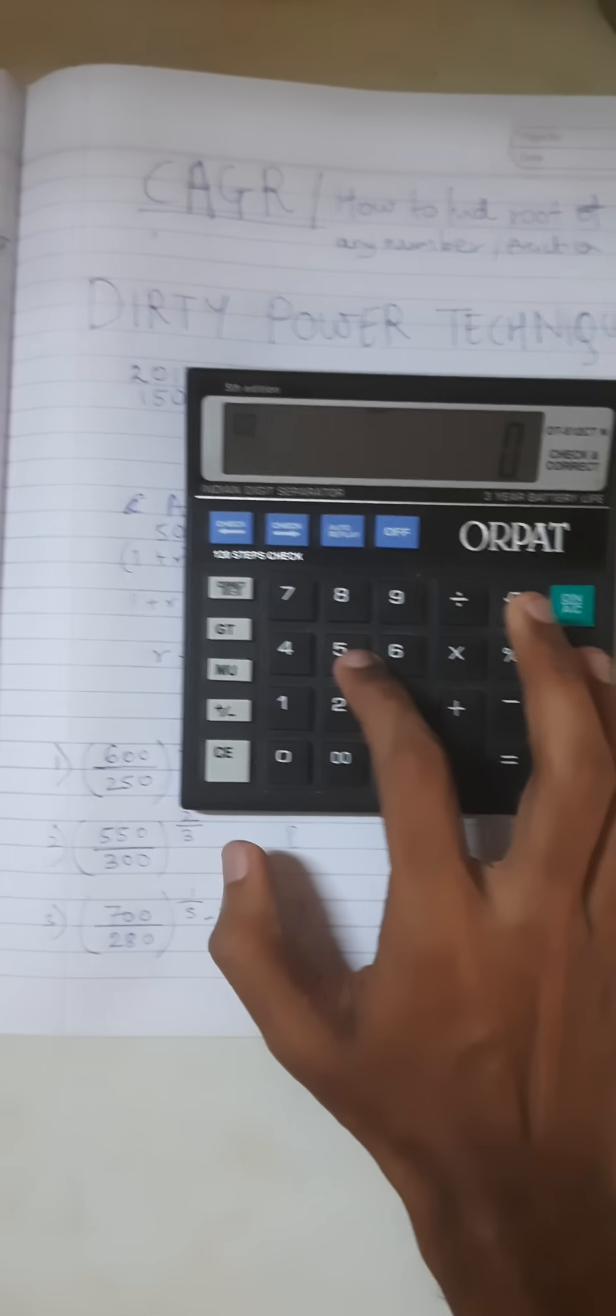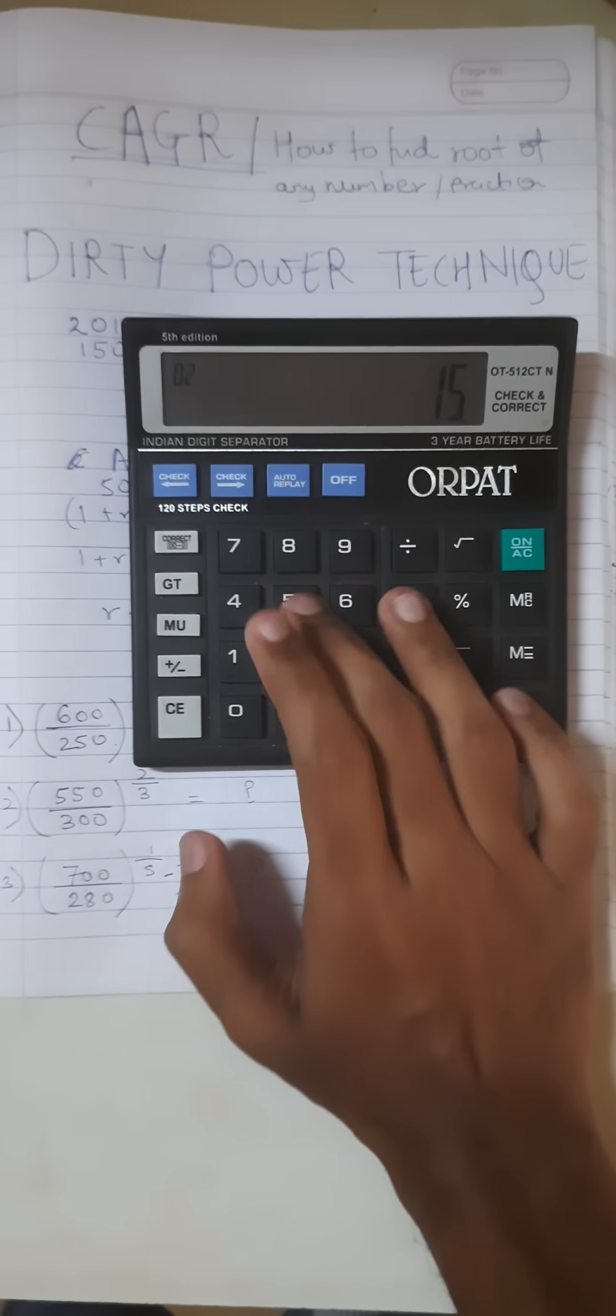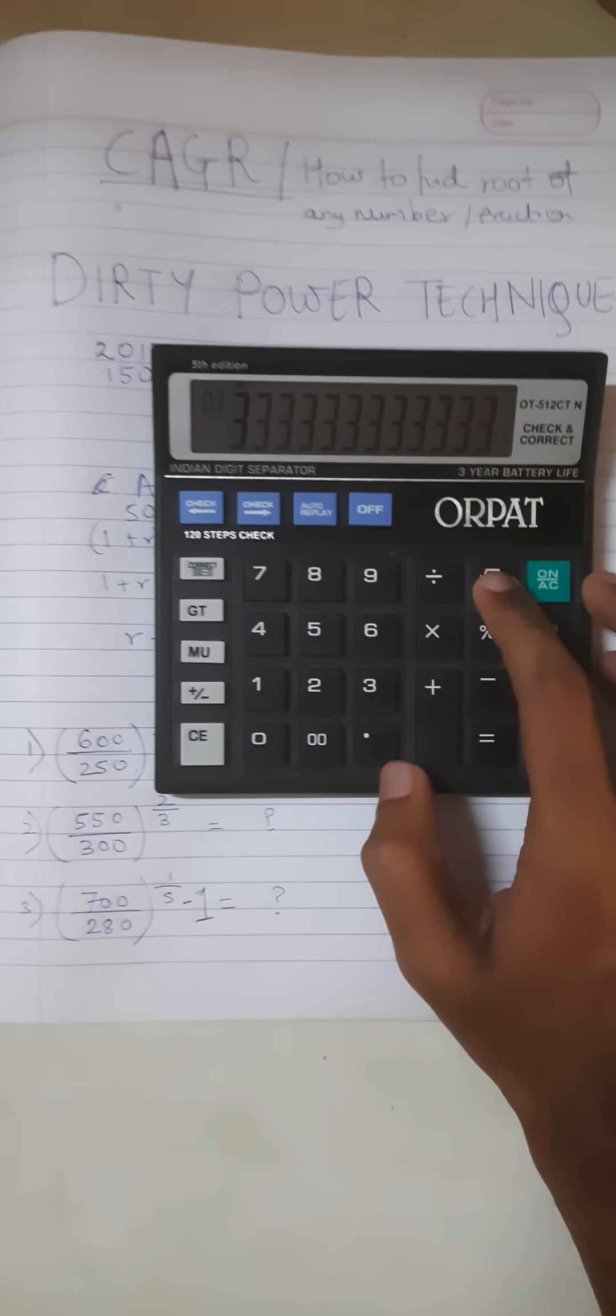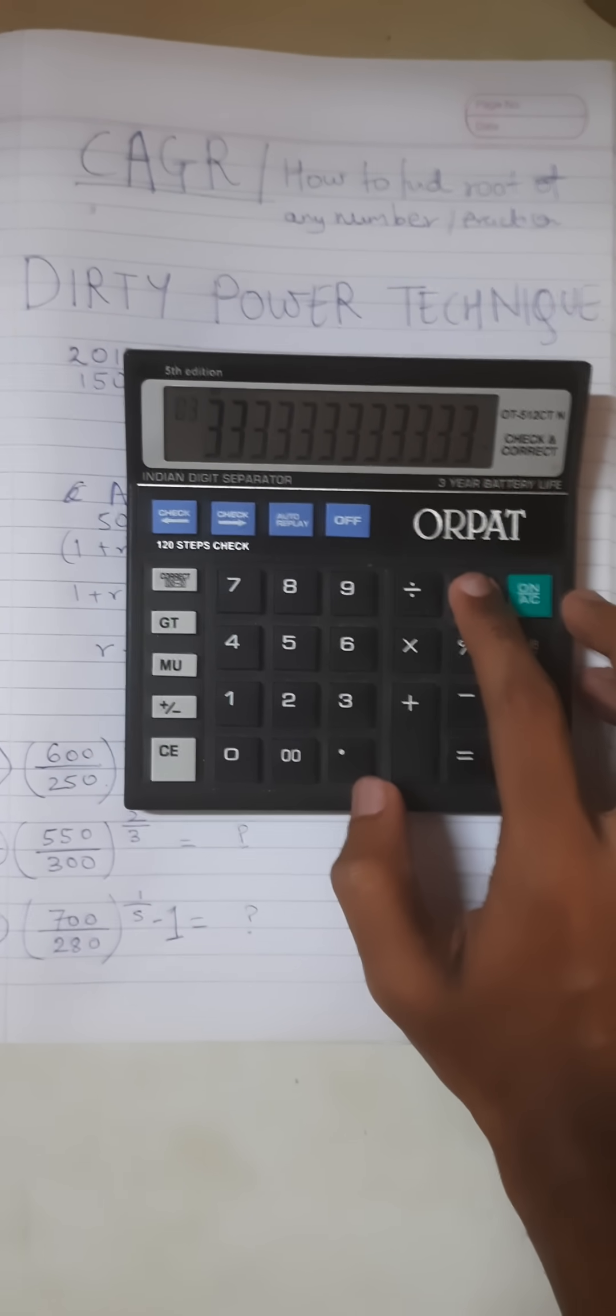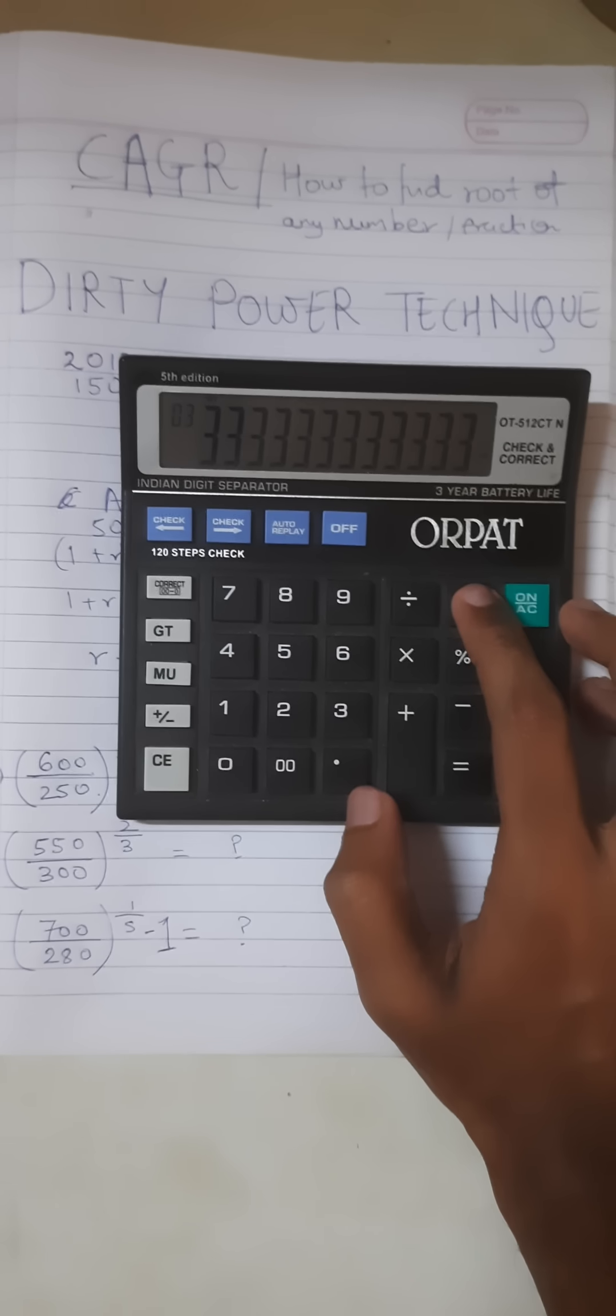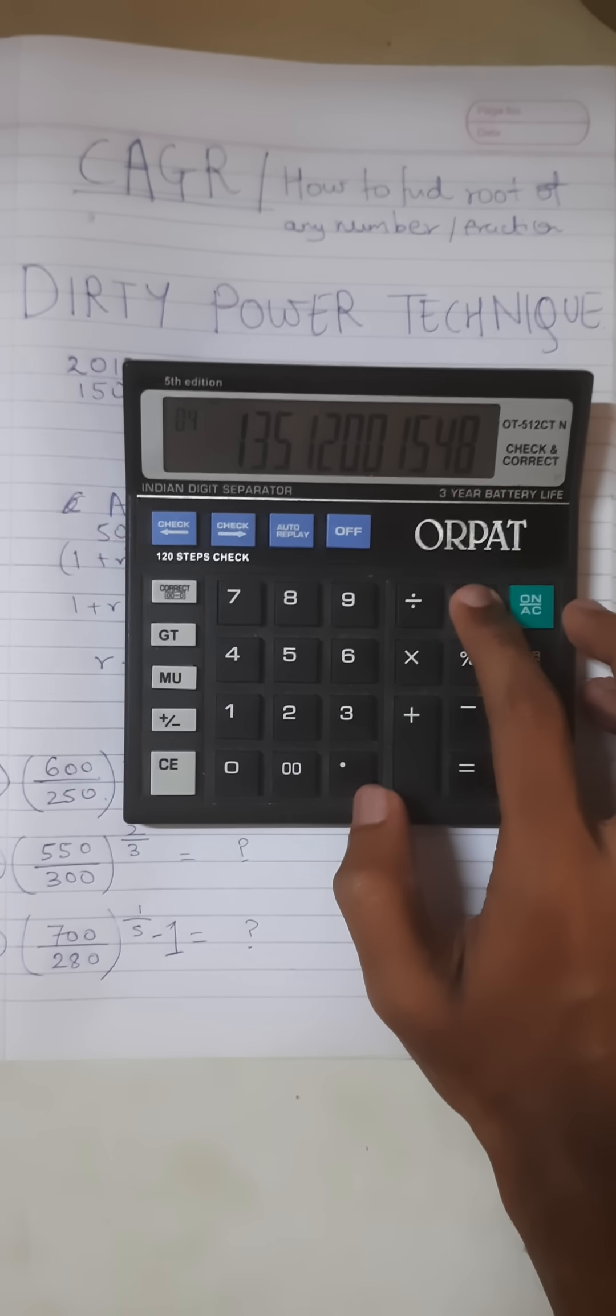First, 500 divided by 150. Whatever value you get, you need to press the square root button 12 times. So we start: 1, 2, 3, 4, 5, 6, 7, 8, 9, 10, 11, 12.